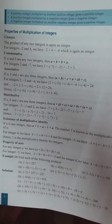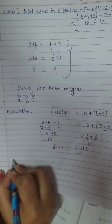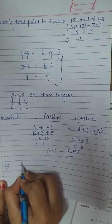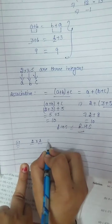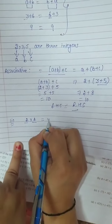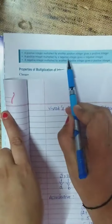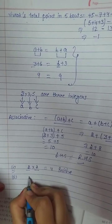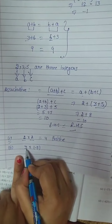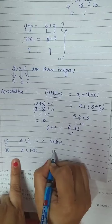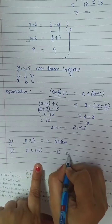For example, positive integer multiplied by positive integer: suppose we have 2 into 2. This is a positive integer and this is also a positive integer. The answer will be 4, which is positive. Next, a positive integer multiplied by a negative integer gives a negative integer. Suppose we have 3 and minus 5; then we multiply these two numbers. 5 into 3 is equal to 15, and the result is negative, so minus 15. This is a negative integer.